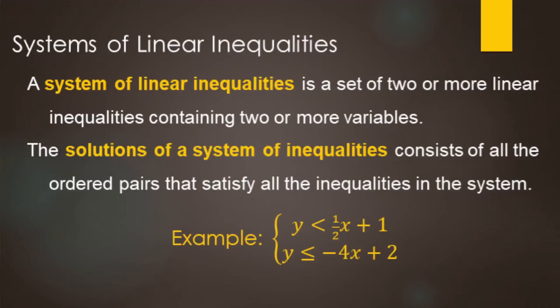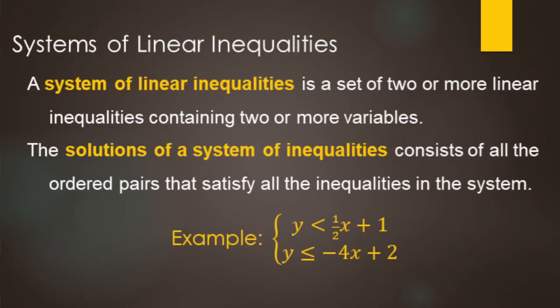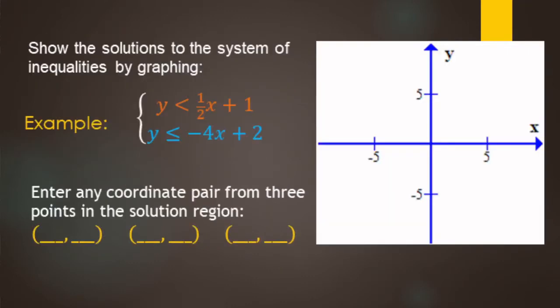In this video we're going to be looking at systems of linear inequalities, where you have more than one inequality and more than one variable. Your solutions are going to be the ordered pairs that make both of the inequalities true, or that satisfy all the inequalities in the system.